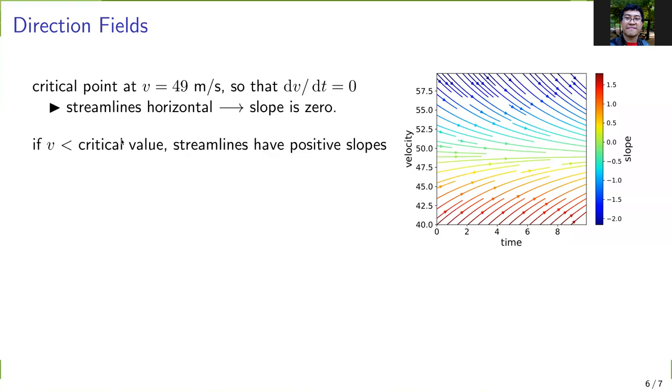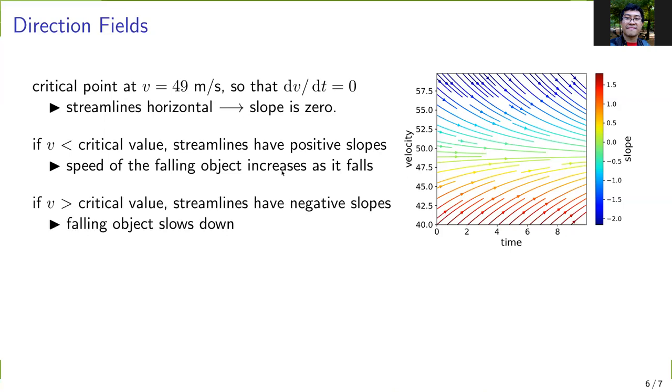If v is less than the critical value, the streamlines have positive slopes, meaning the speed of the falling object increases as it falls. For v greater than the critical value, the streamlines have negative slope, so the falling object slows down.